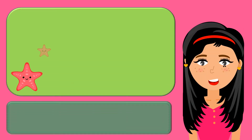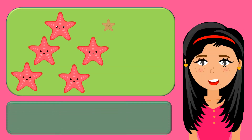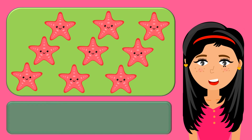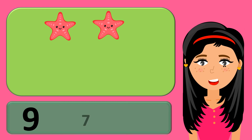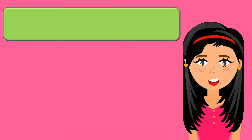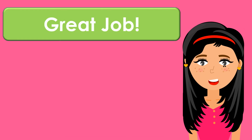One, two, three, four, five, six, seven, eight, nine. Nine. One, two, three, four, five, six, seven. Seven. Nine minus seven equals... Two. Great job!